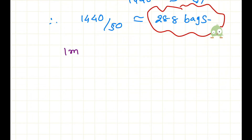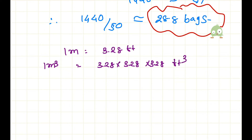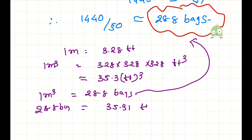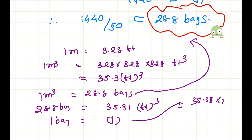We know 1 meter equals 3.28 feet, so 1 meter cube equals 3.28 × 3.28 × 3.28 cubic feet, which equals 35.3 cubic feet. Now we know 1 meter cube equals 28.8 bags. So 28.8 bags equals 35.31 cubic feet. Therefore 1 bag equals 35.31 divided by 28.8, which gives 1.226 cubic feet.